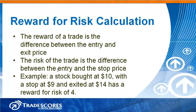The second component of the trade score is the reward for risk calculation. The reward of a trade is the difference between the entry price and the exit price. The risk of the trade is the difference between the entry and the stop loss price. For example, a stock bought at $10 with a stop at $9, which is then exited at $14, has a reward for risk of 4. The risk of the trade is $10 minus $9, that's $1. The reward of the trade is $14 minus $10 for a reward of 4 — the reward for risk is 4 to 1, or 4.